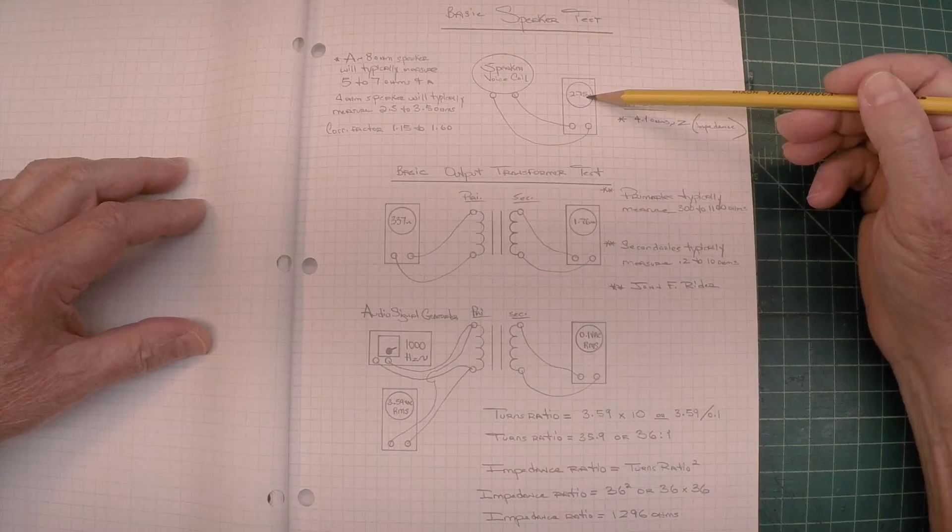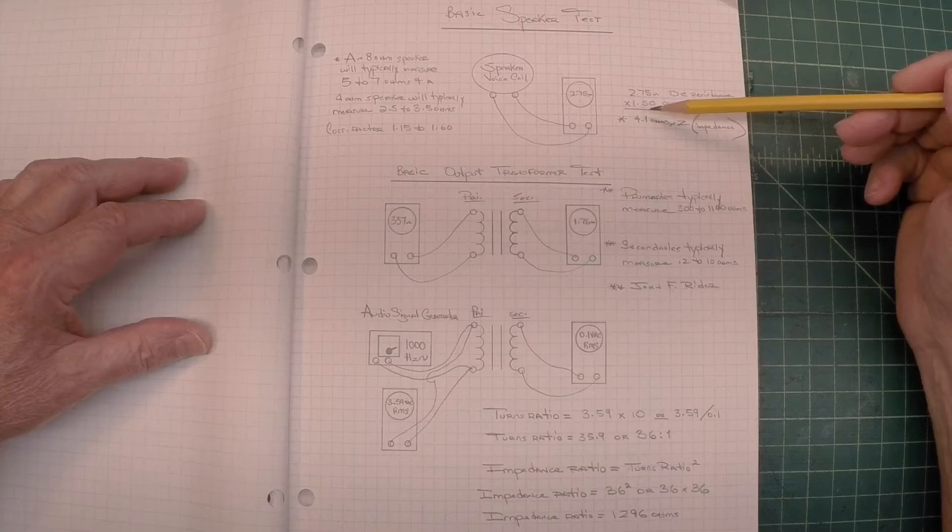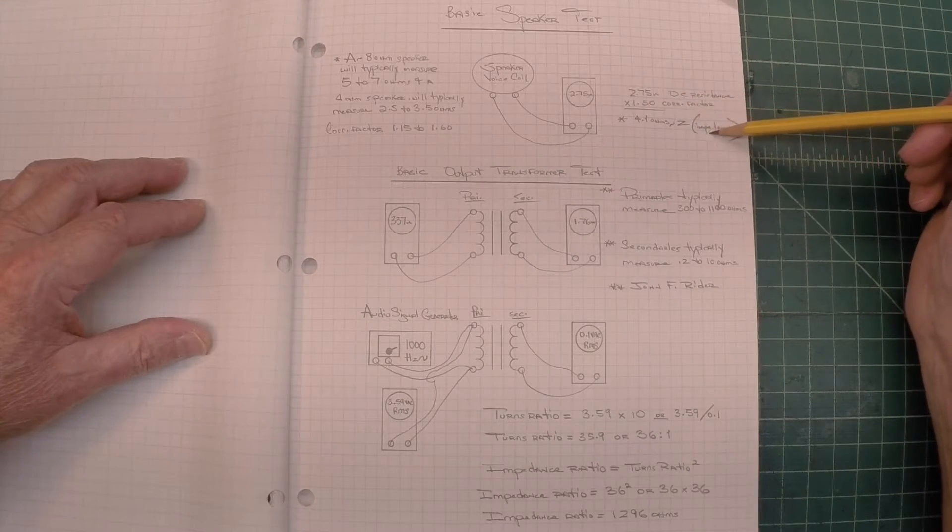So what I typically do is use a correction factor anywhere from 1.15 to 1.60 to convert the DC resistance to what the speaker impedance would be. Again, that's just an approximate impedance.